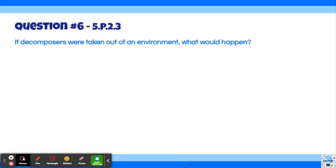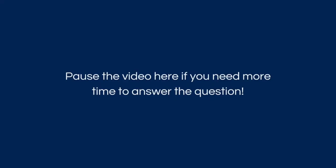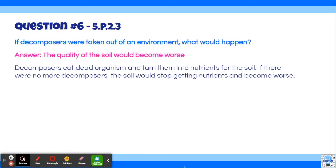Okay, moving on to question number six. If decomposers were taken out of an environment, what would happen? Well, the quality of soil would become worse. Decomposers eat dead organisms and turn them into nutrients for the soil. If there were no more decomposers, the soil would stop getting nutrients and become worse.